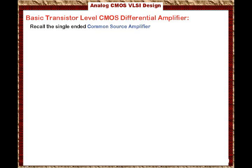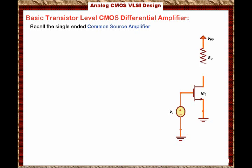Here is the circuit. We have transistor M1, where V1 is coming into the gate. We have RD at the drain, and the gain of this amplifier was evaluated in earlier lectures to be minus GM times RD in parallel with RO.